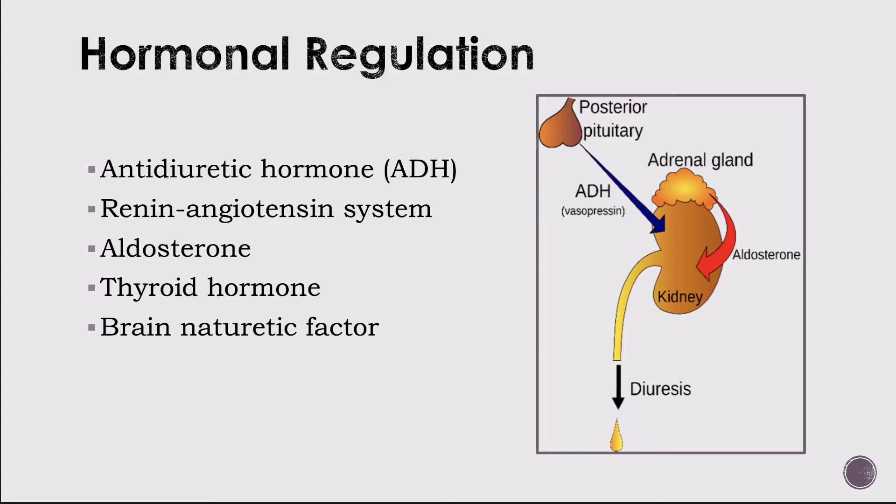The renin-angiotensin system also regulates fluid volume. When extracellular or intravascular fluid volume decreases — from blood loss, for example — receptors in the glomeruli respond to decreased perfusion to the kidney. The kidneys release renin, an enzyme that converts angiotensin 1 to angiotensin 2. Angiotensin 2 acts on the nephrons to retain sodium and water and directs the adrenal cortex to release aldosterone. Together, these increase fluid volume. Aldosterone stimulates the distal tubules to reabsorb sodium and excrete potassium, increasing intravascular volume.